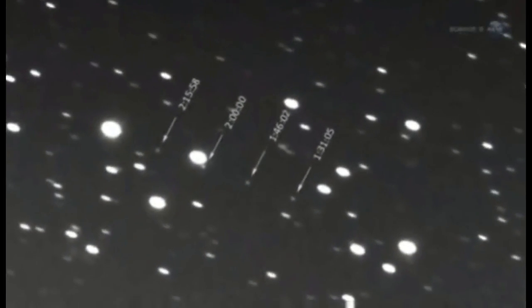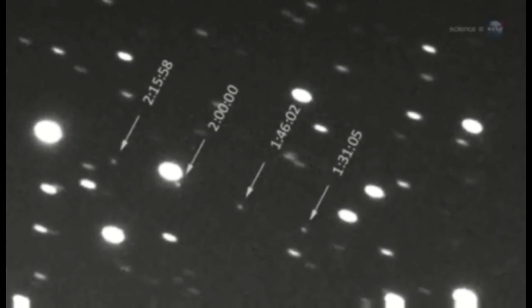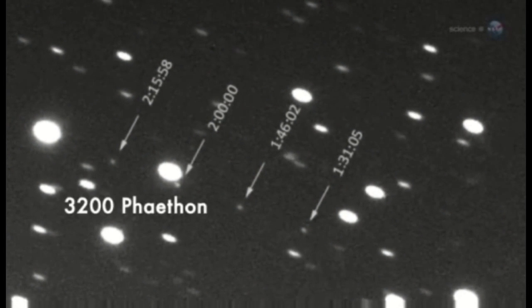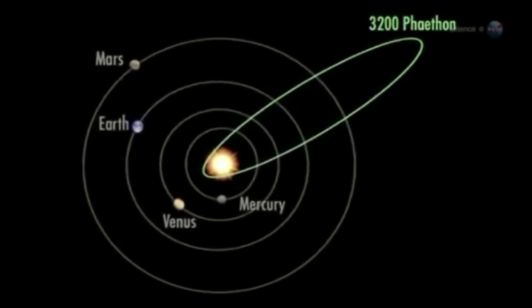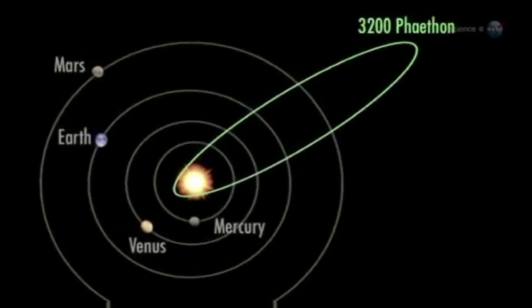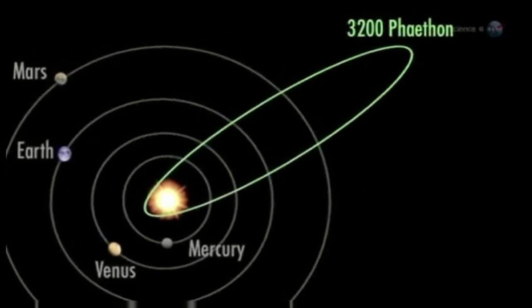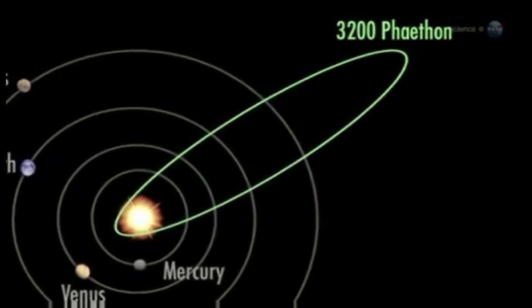The Geminids are different. The parent is not a comet, but a weird rocky object named 3200 Phaethon. When 3200 Phaethon was discovered in 1983 by NASA's IRAS satellite, astronomers quickly realized that they had found the source of the Geminids. The orbit of 3200 Phaethon was such a close match to that of the Geminid debris stream, no other conclusion was possible.